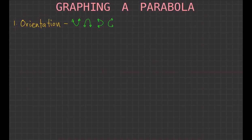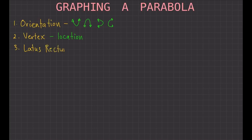The second part is the vertex. The vertex gives you the location of the parabola — where the parabola is located in the Cartesian plane. The third part is the latus rectum, which gives you the width of the parabola — how wide the parabola is going to be.